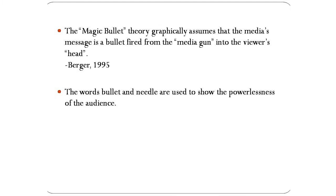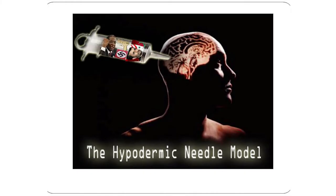The Magic Bullet Theory graphically assumes that the media message is like a bullet fired from a media gun into the viewer's head. The words bullet and needle are also used to show powerfulness of the media and powerlessness of the audience. You can see the graphical representation of the hypodermic needle model in your screen. There is a syringe directly injected into the brain of the audience, and in this syringe contains certain pictures and text injected into the audience's brain.